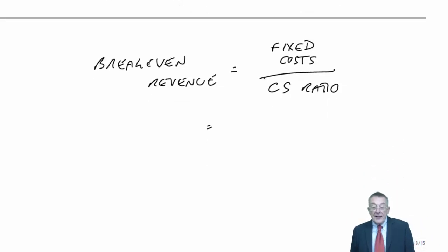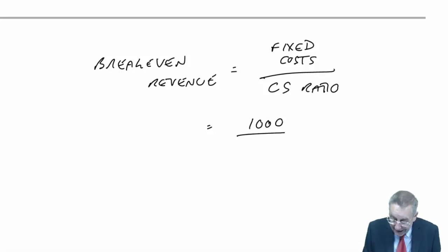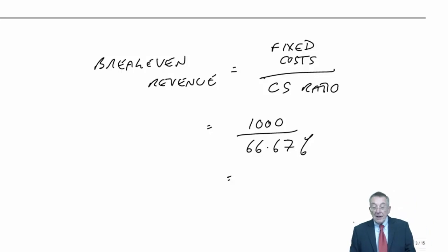Just check with me. The fixed costs are $1,000, that's the total contribution we need to break-even. We divide by the CS ratio because contribution must be 66% of the revenue. So divide by 66.67% and we get, as near as damn it, $1,500. There's a tiny bit of rounding because it's actually 66.666% recurring.